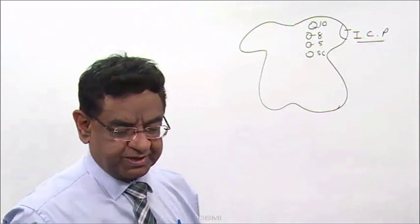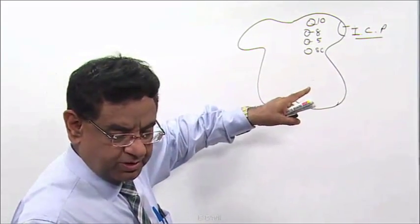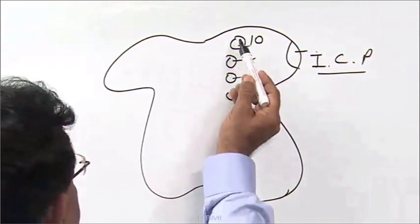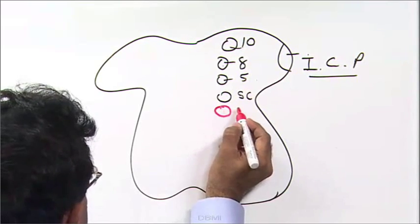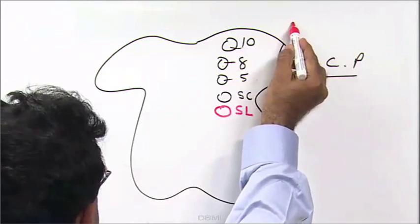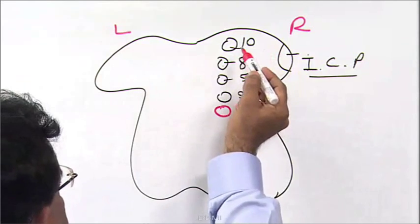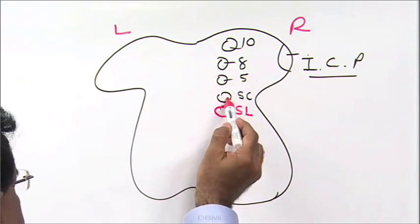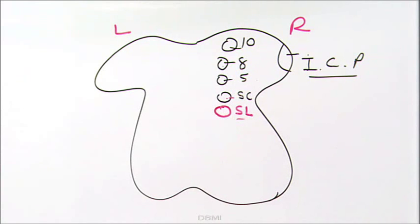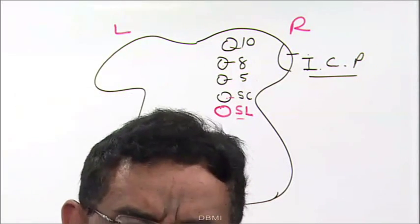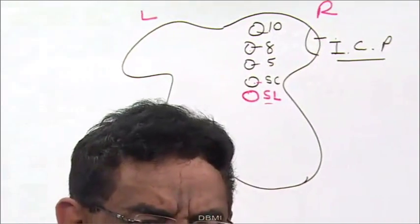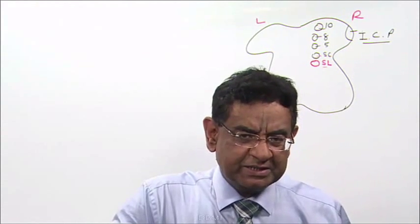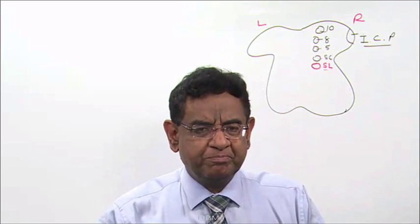This is the sympathetic chain. And here is the spinal lemniscus on the right side. This is the right side; this is the left side. So: tenth nerve nucleus, eighth nerve nucleus, fifth nerve nucleus, sympathetic chain, and spinal lemniscus — all right-sided. This right-sided spinal lemniscus contains left-sided pain, touch and temperature.